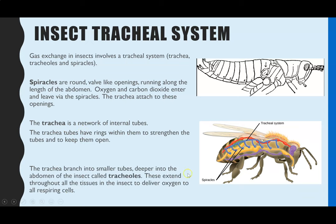The final structure is the tracheals. The trachea branch into even smaller tubules called tracheals, which reach every single tissue within the insect to deliver oxygen at the respiring cells. That's how all the cells within the insect receive oxygen, and the tracheals also pick up carbon dioxide from respiration for it to then diffuse out.